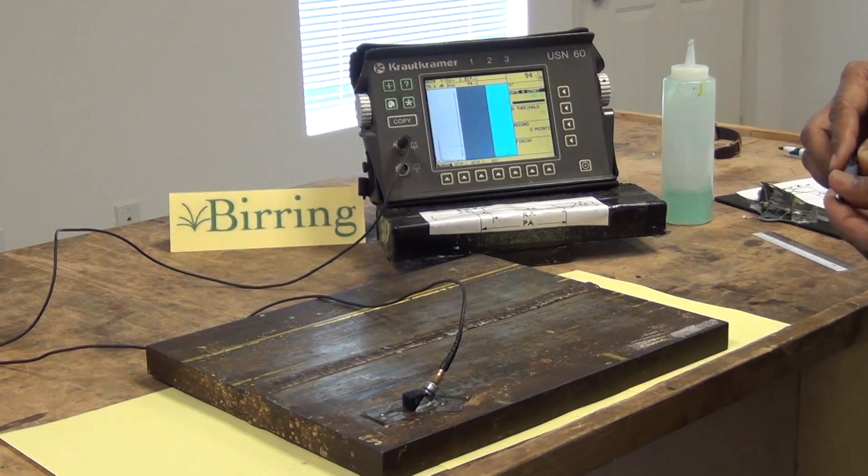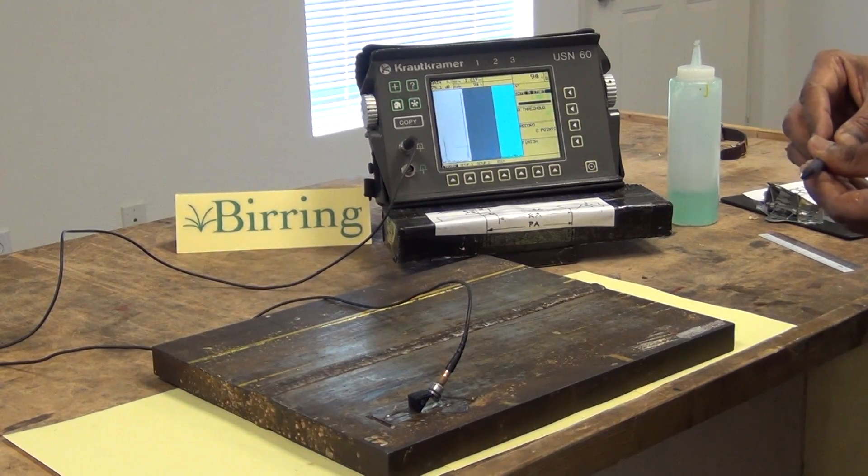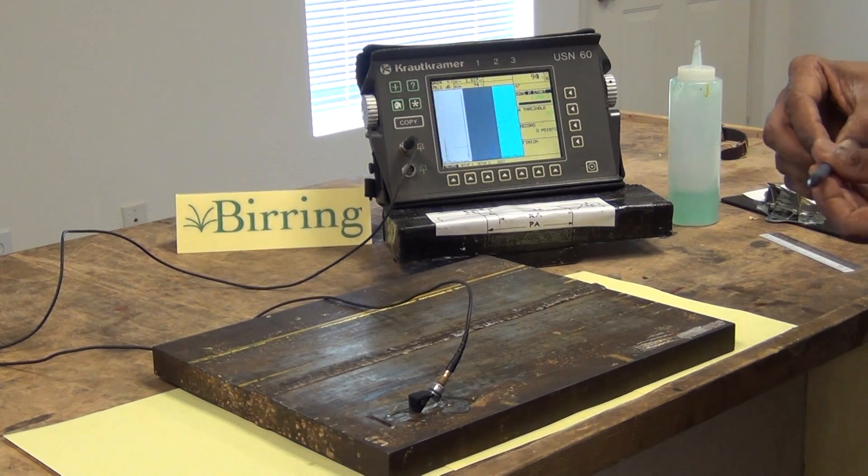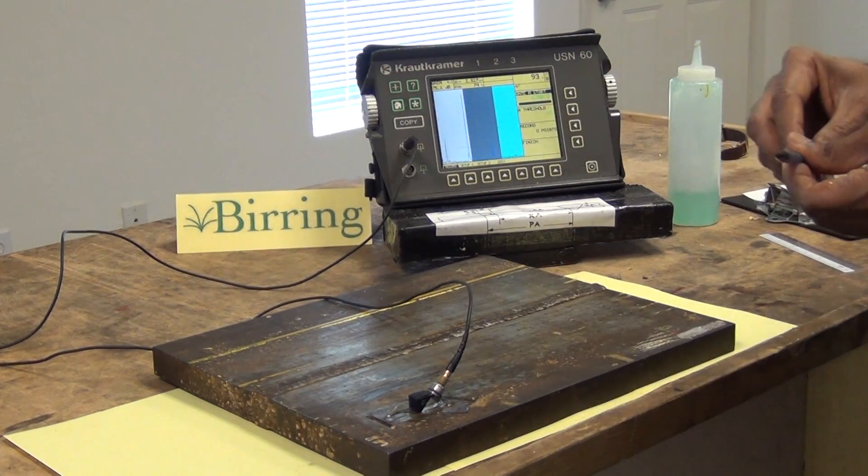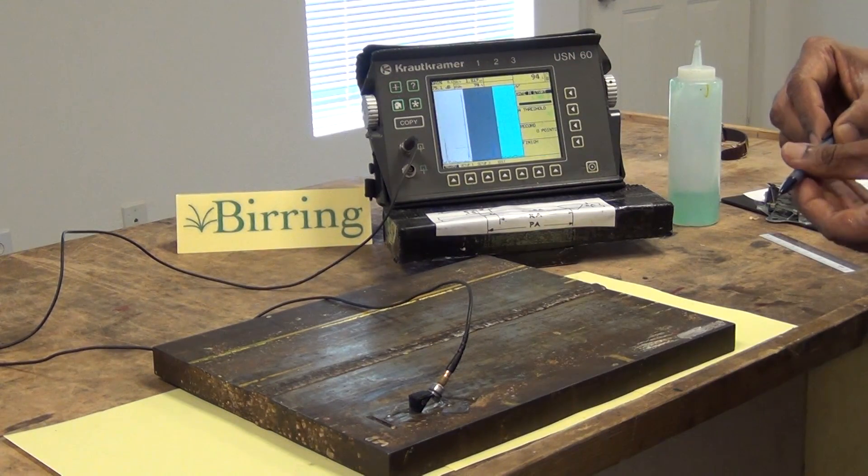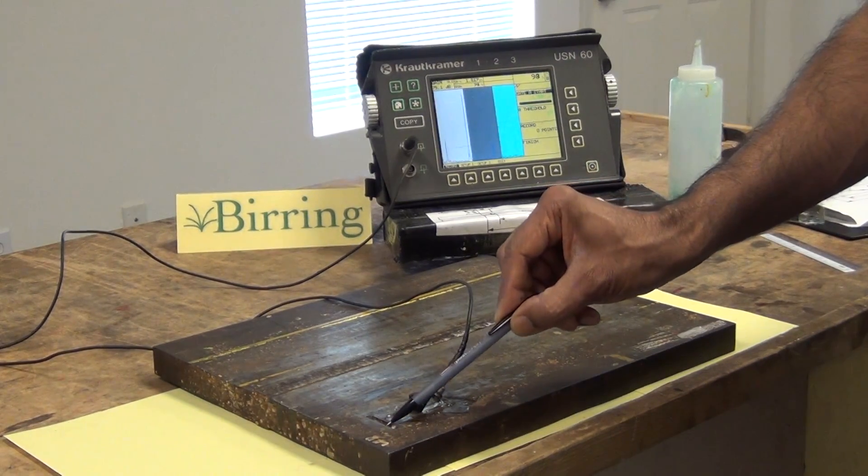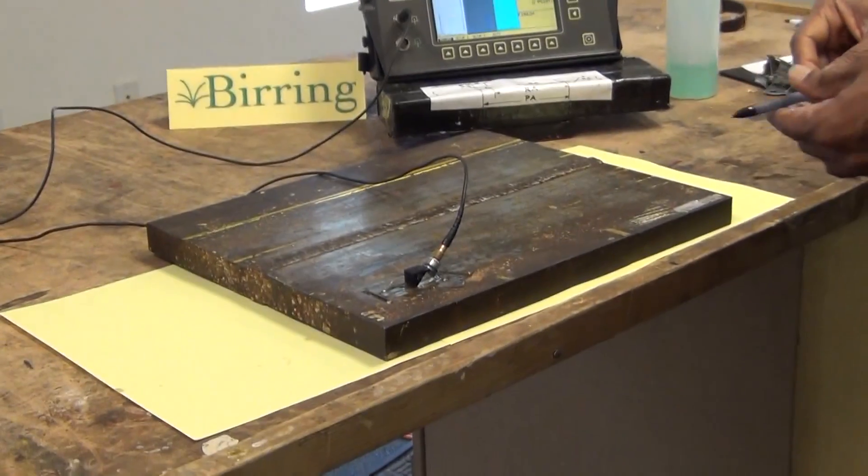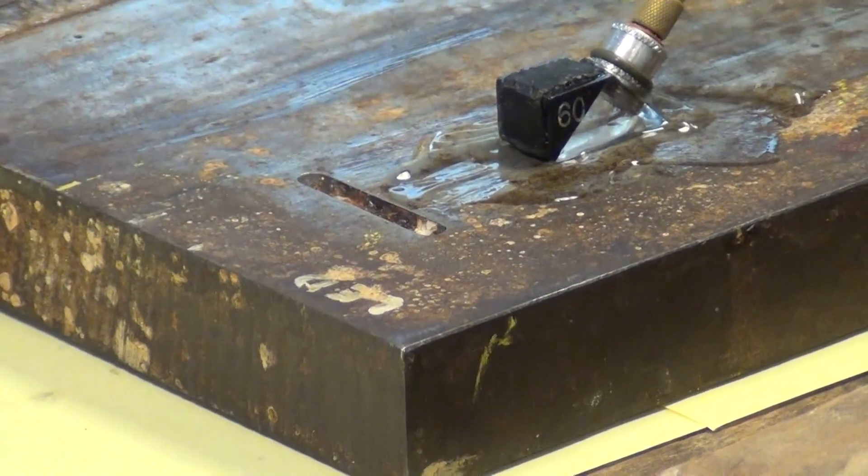We now have to set up the gain on the machine to get the right sensitivity. For pipes we use notches for establishing the sensitivity. This is a plate but let's assume it's a pipe. We would be using these notches which are 10 percent deep. There is one on the top and one on the bottom.